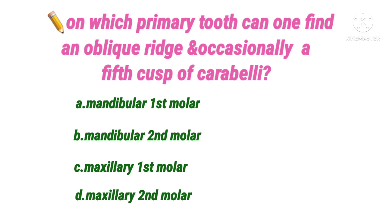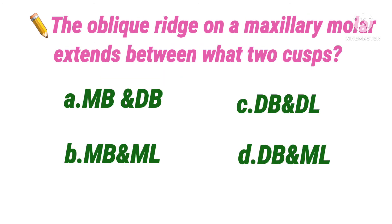Next question: the oblique ridge on a maxillary molar extends between which two cusps? Option A mesiobuccal and distobuccal, B mesiobuccal and mesiolingual, C distobuccal and distolingual, D distobuccal and mesiolingual. The oblique ridge, most prominent on the maxillary permanent first molar, extends between the mesiolingual and distobuccal cusps. The answer is option D, and it separates the mesiobuccal and distolingual cusps.